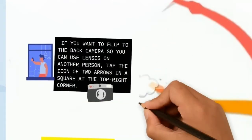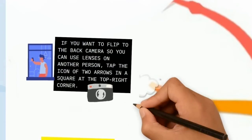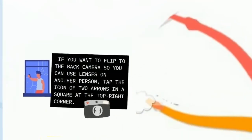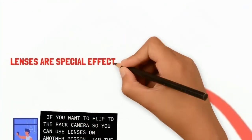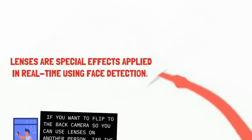If you want to flip to the back camera so you can use lenses on another person, tap the icon of two arrows and a square at the top right corner. Lenses are special effects applied in real time using face detection.